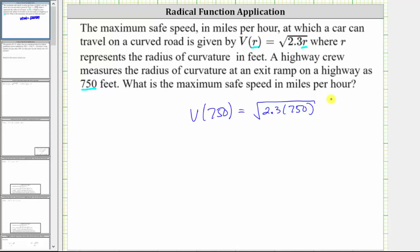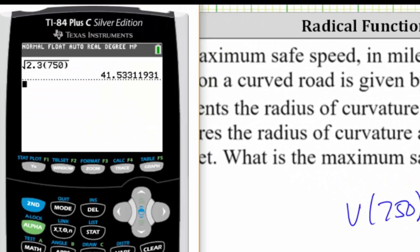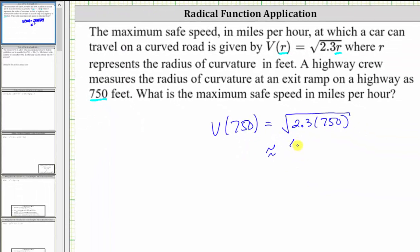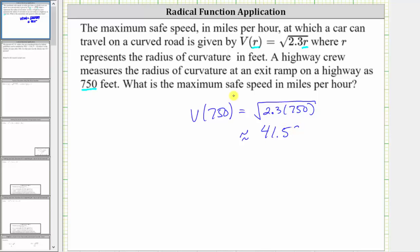And now we will go over to the calculator and get a decimal approximation for this square root. Notice how the function value is approximately 41.53 and this would be miles per hour.